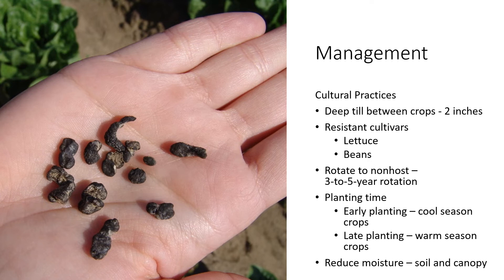We can utilize resistant cultivars in some crops — lettuce and beans, for example, have resistant cultivars available. Check your seed source, and if you do have Sclerotinia on your site, utilizing resistant cultivars is ideal. Otherwise, it is really critical to rotate to a non-host — something Sclerotinia will not affect. A three-year minimum rotation is recommended, but rotating up to five years out of a susceptible host will really help reduce the number of Sclerotinia propagules in the soil.